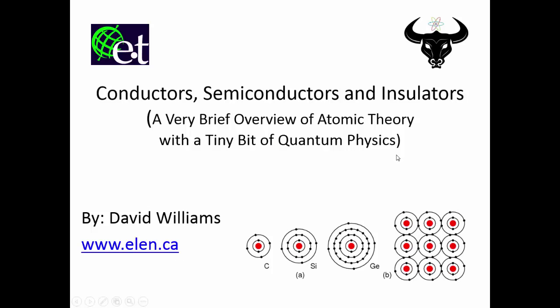This was a brief overview of atomic theory with a tiny bit of quantum physics, covering the different energy levels that electrons can exist in. Hopefully this gives you a better understanding of why there is a difference between conductors, semiconductors, and insulators, and provides a good background for getting into how semiconductors operate. Thanks for watching, and I'll see you in the next video.